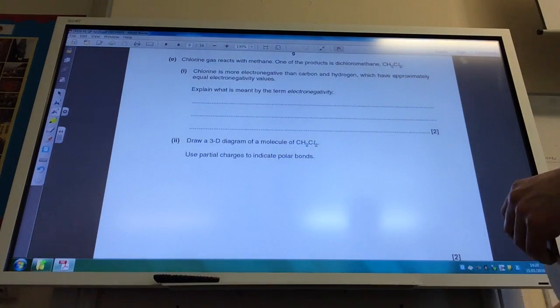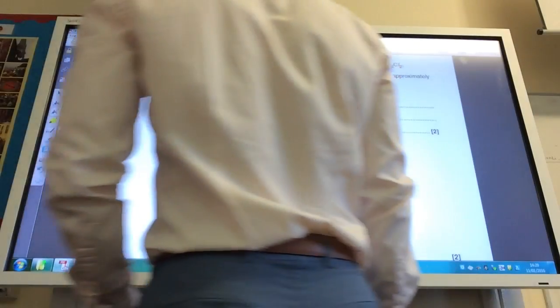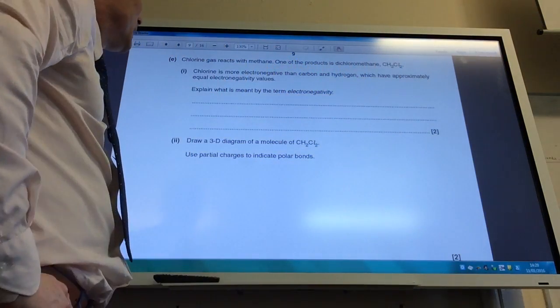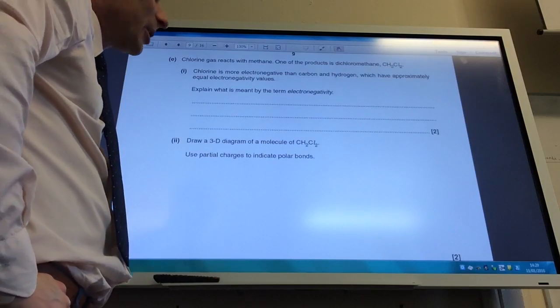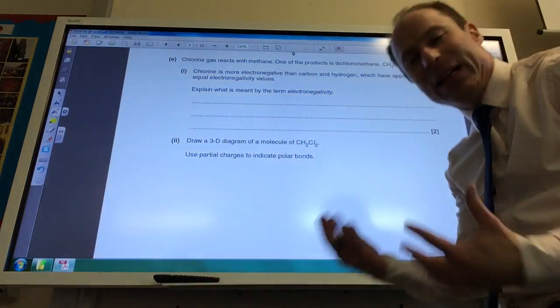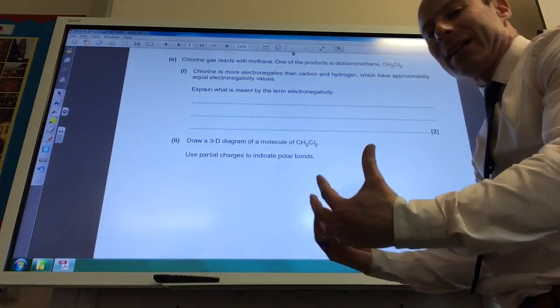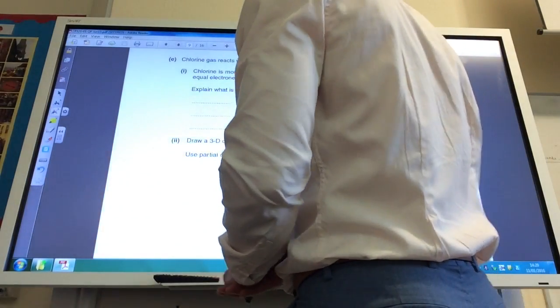Okay, so moving on then. Chlorine gas reacts with methane to form dichloromethane. Chlorine is more electronegative than carbon and hydrogen, which are approximately equal electronegativity values. What is meant by the term electronegativity? So this is your definition. It's the ability of an atom in a covalent bond to attract the electron pair towards itself.